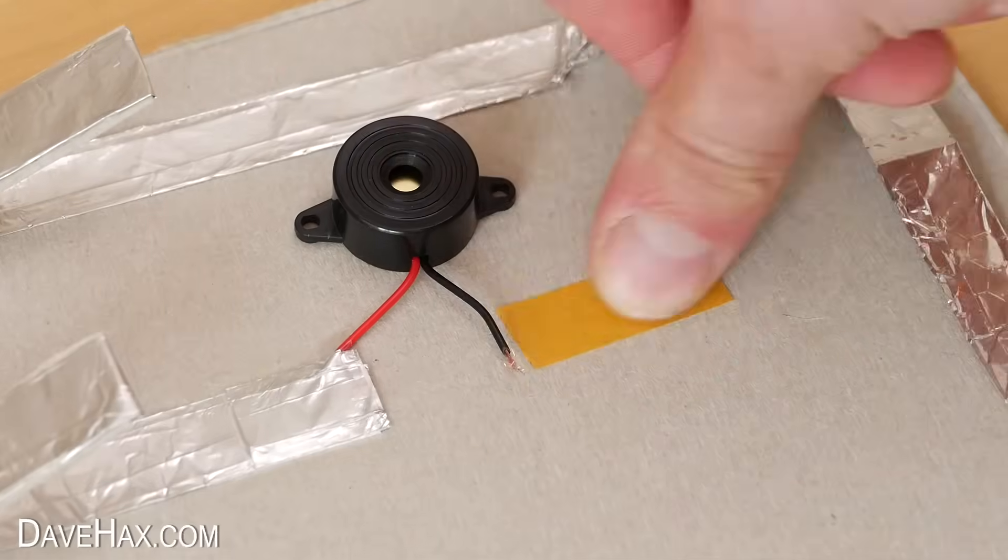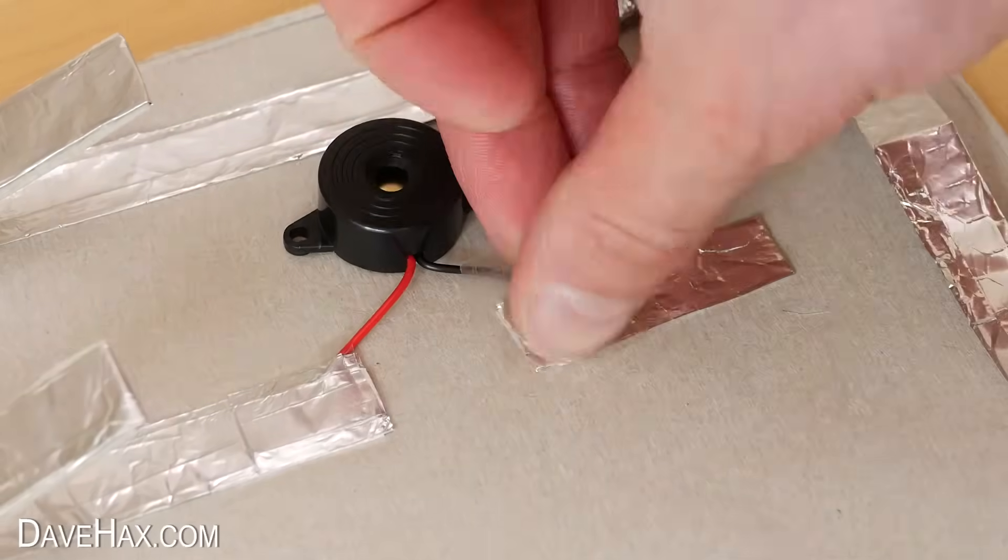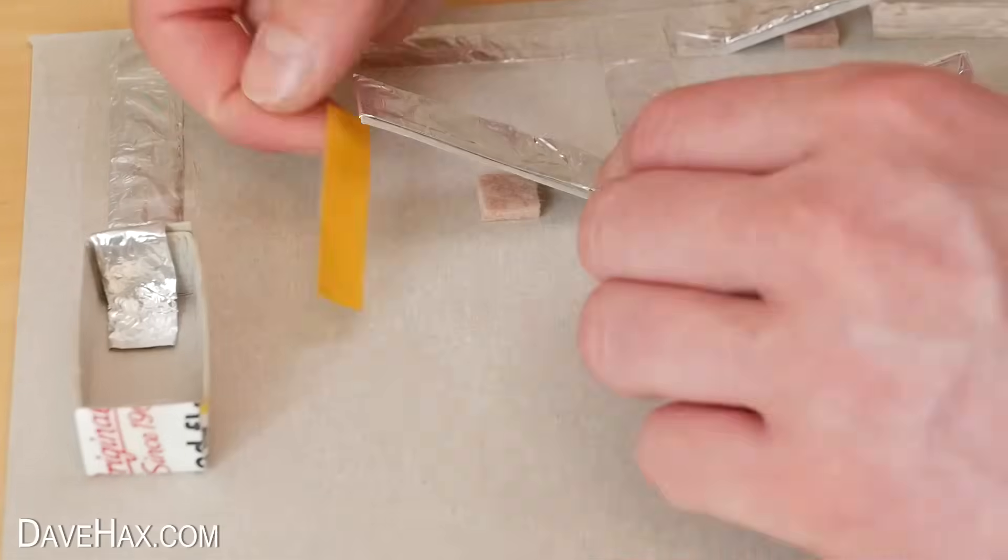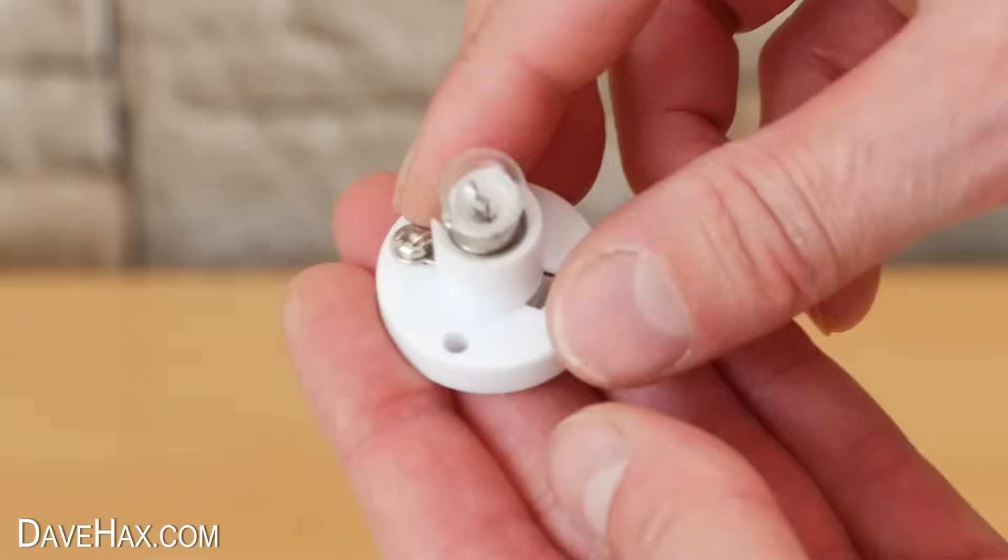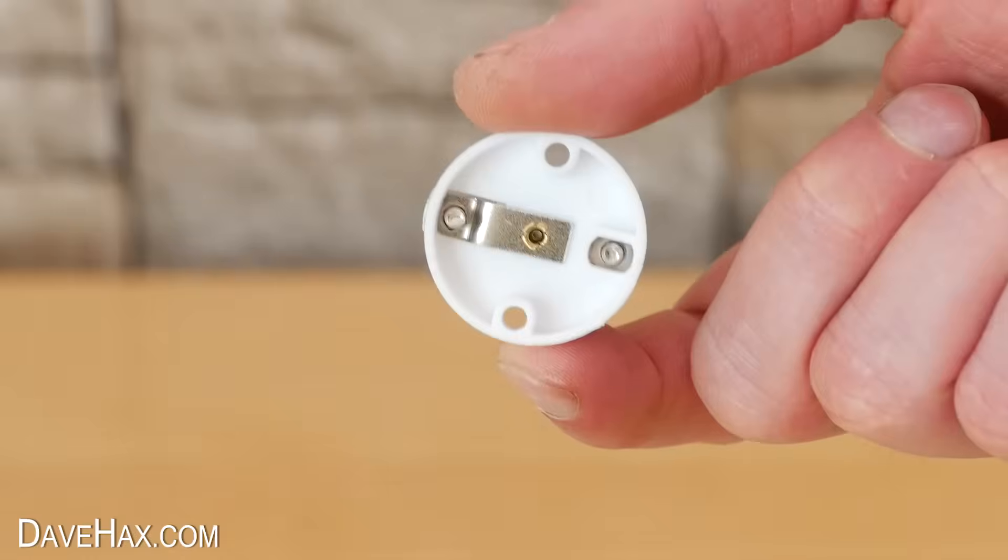I did the same on the other side. Then continued building the circuit underneath the other switch. And now we're ready to fix on the bulb and holder.